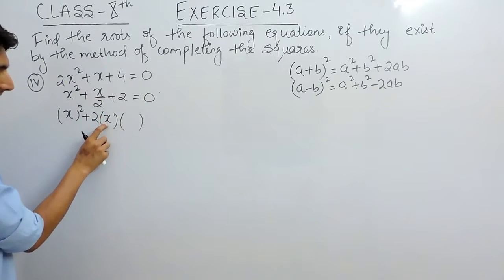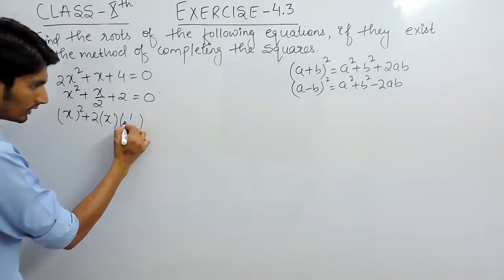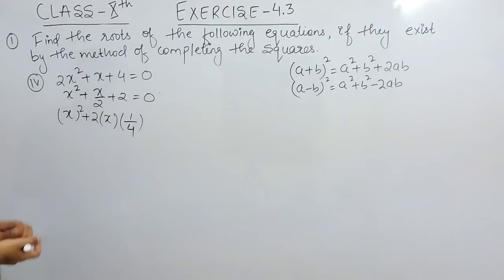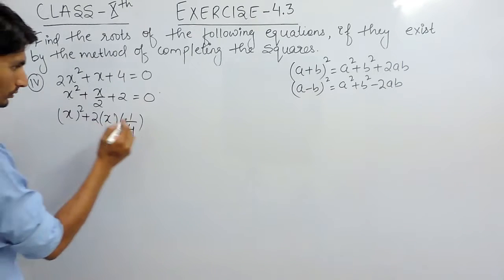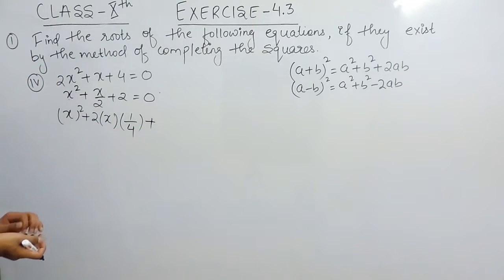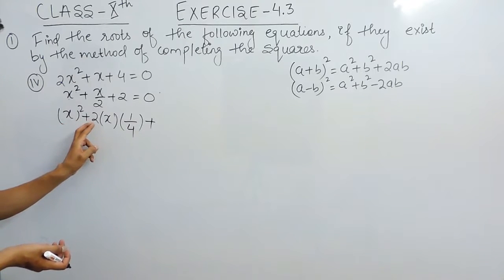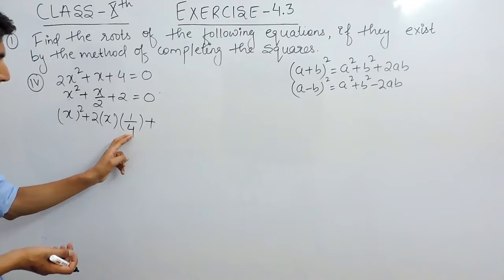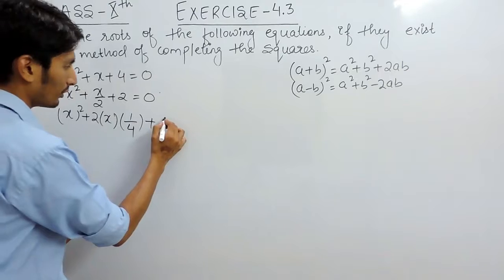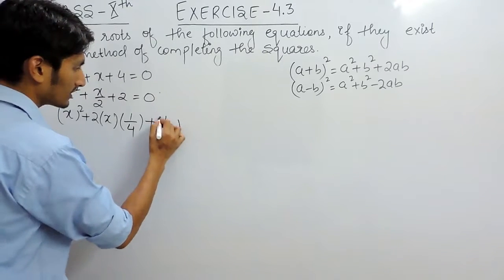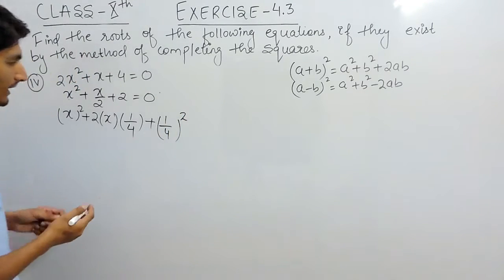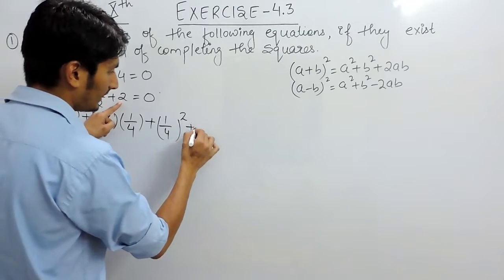But the answer comes out to be x by 2. So we have already x but instead of 2 we need 1 upon 2. So here I am writing 1 upon 4 so that 2 can cancel out 2 and the result will be x upon 2. Same as this result. So we have a square plus 2 into a into b. So obviously our b is 1 upon 4. So our b square must be 1 upon 4 square.